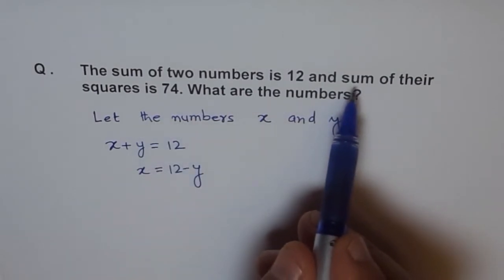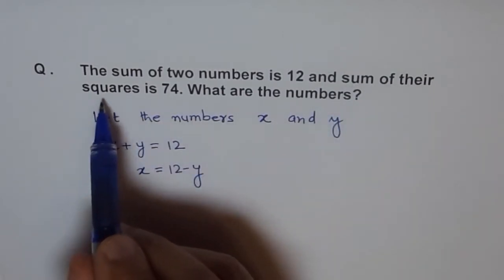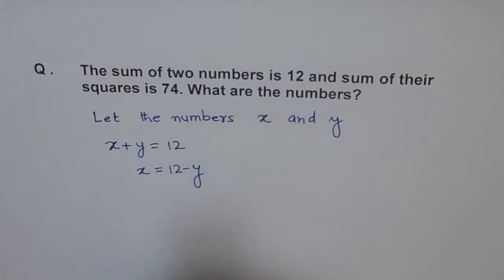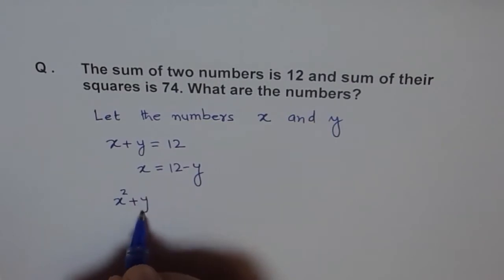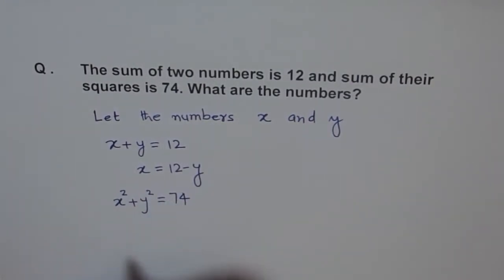Now, sum of their squares is 74. So, that means sum of their squares will be x square plus y square is equal to 74. This is sum of their squares.